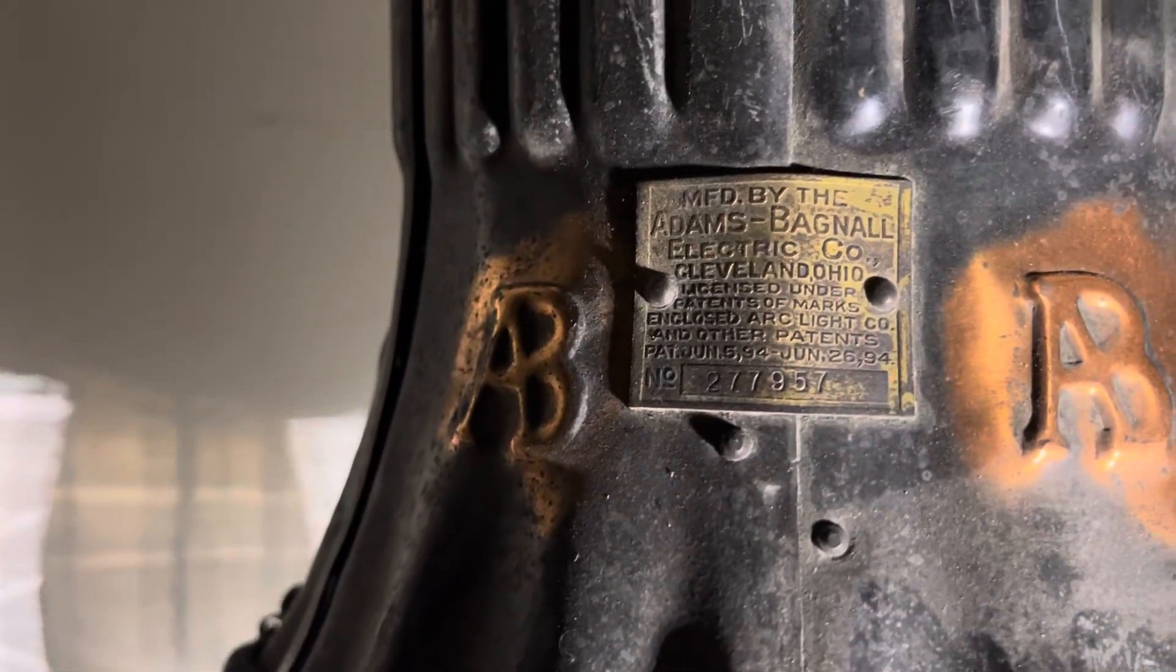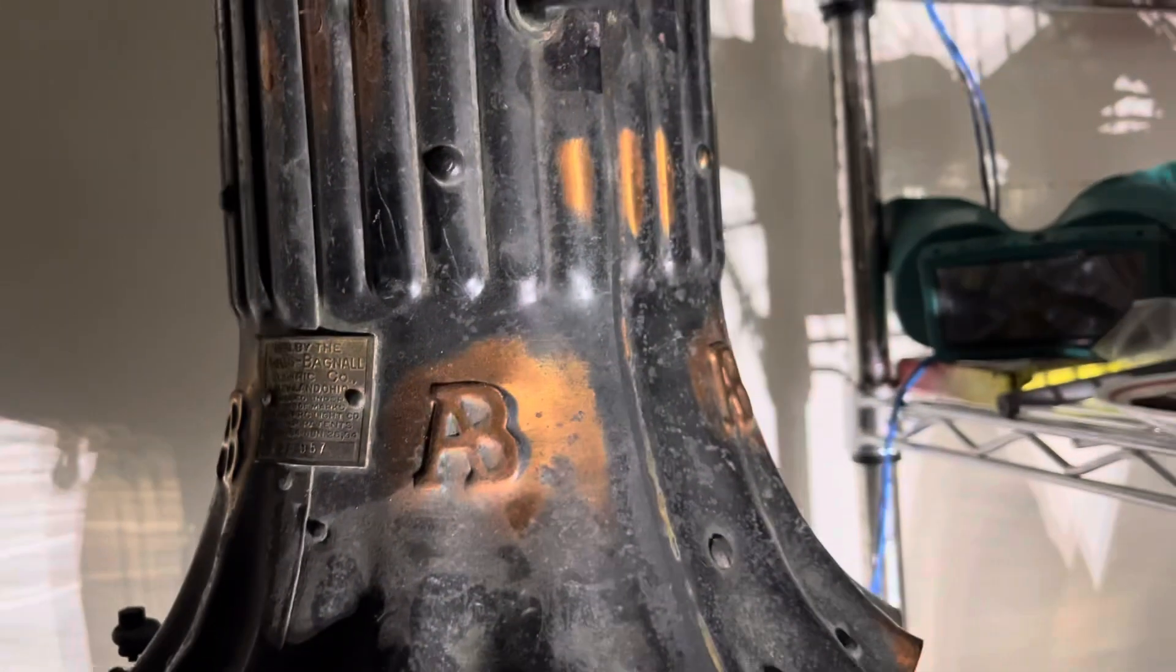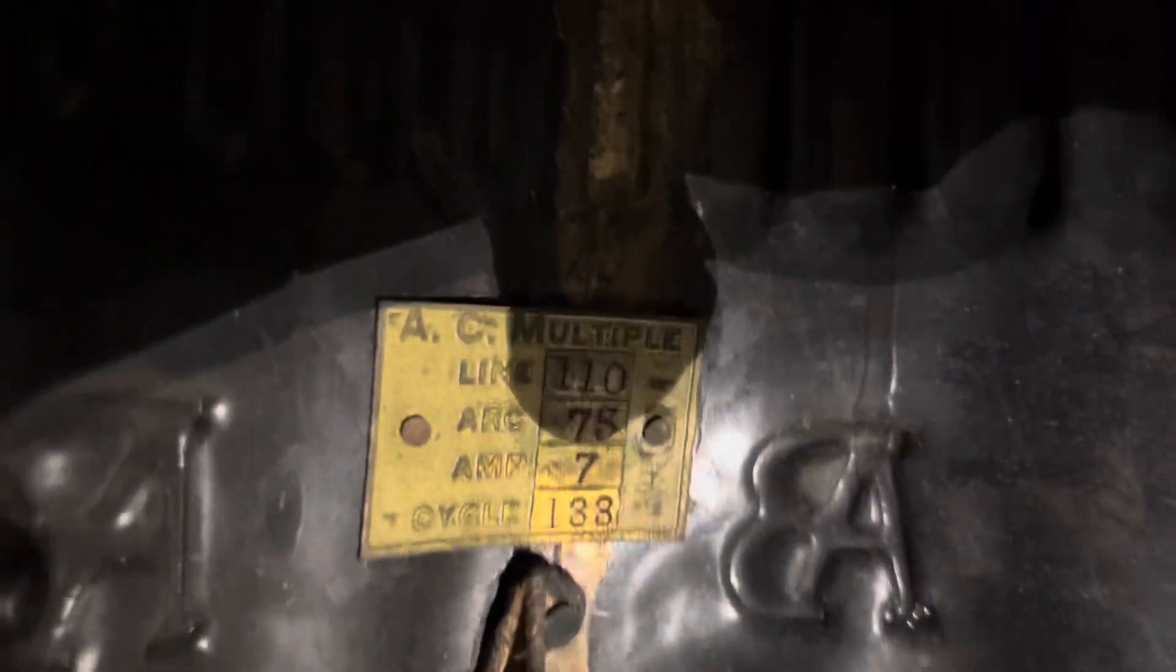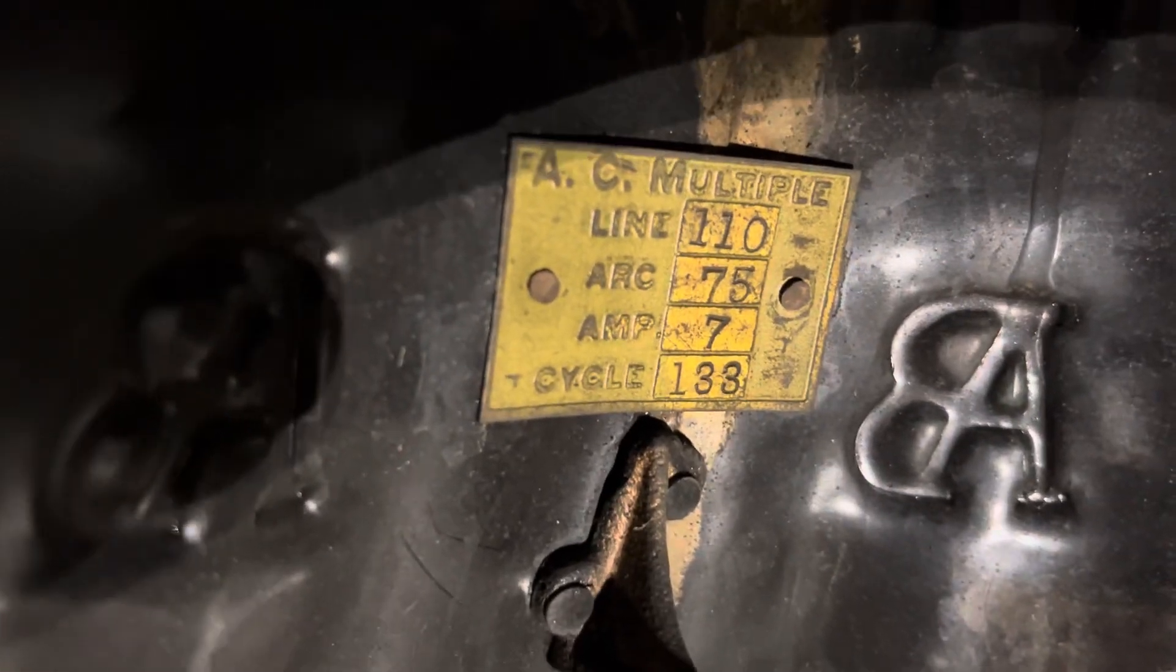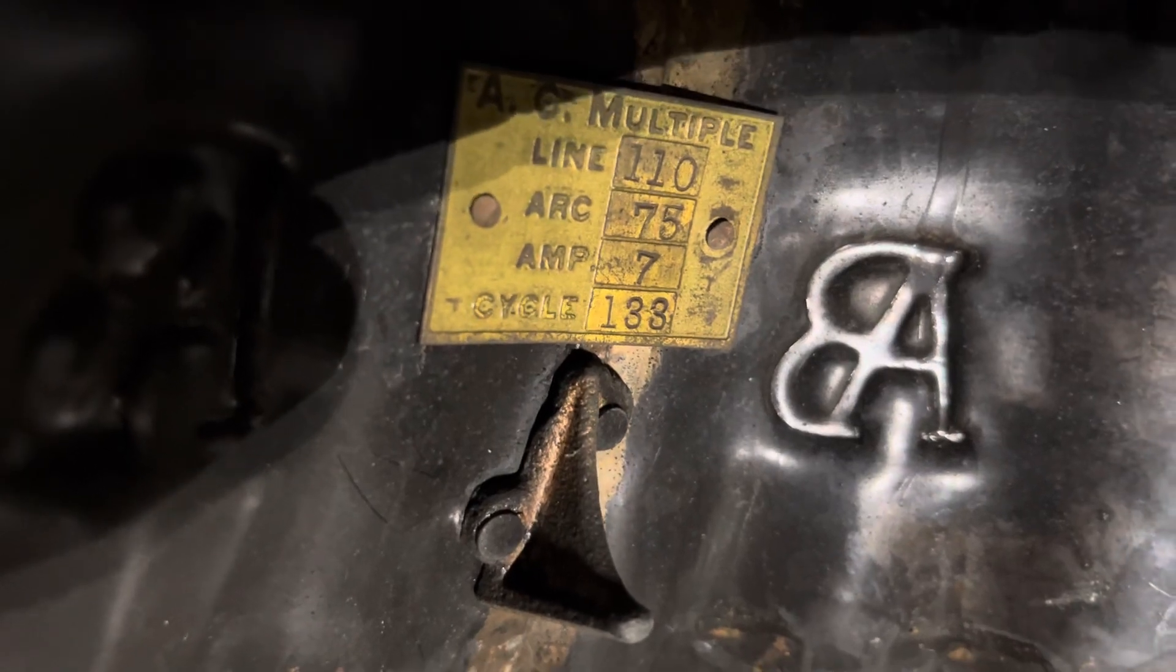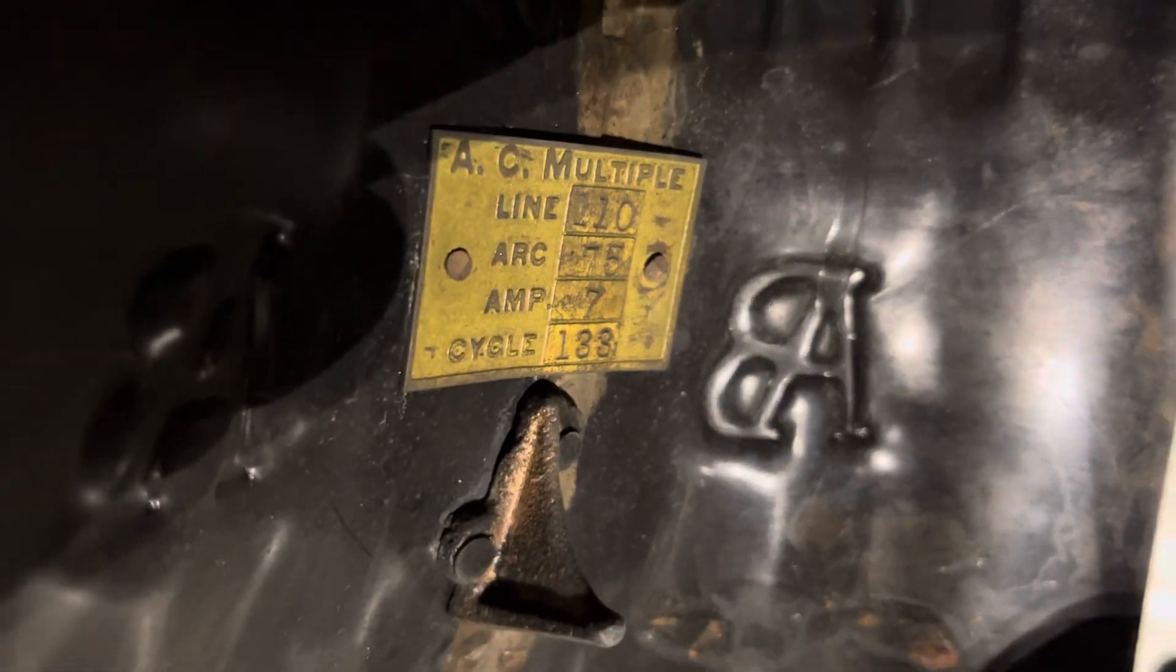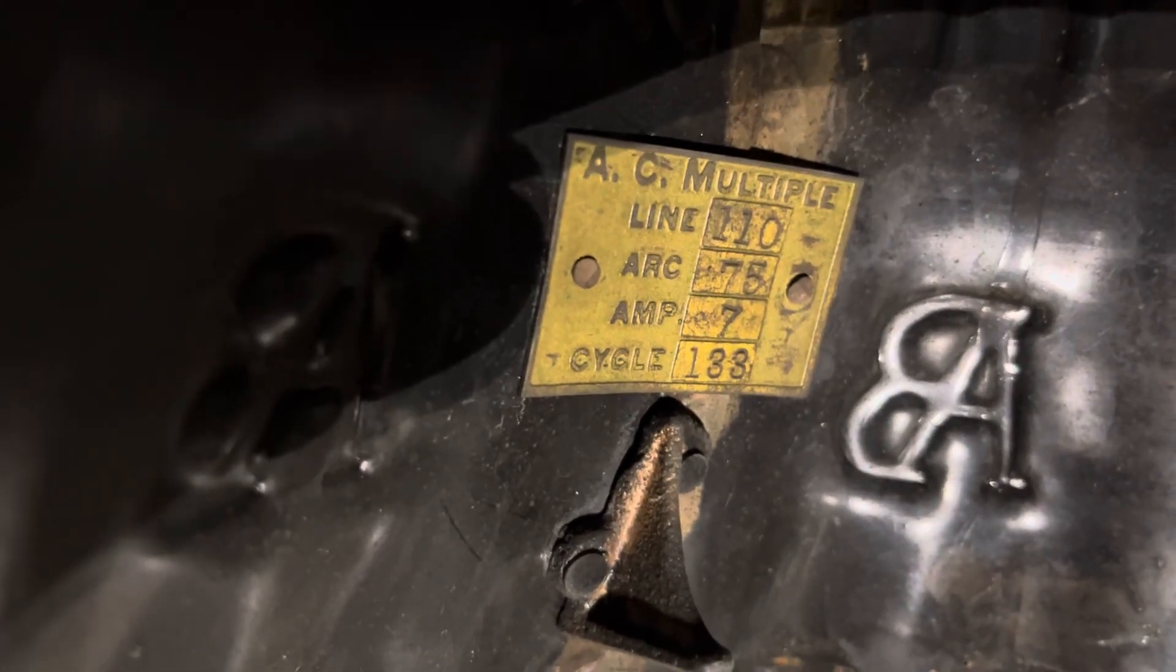Our nameplate right here has a very late serial number. It's manufactured by the Adams Bagnell Electric Company of Cleveland, Ohio with various different patent numbers. Opening the door, this is very uncommon for these Adams Bagnell lamps, but this particular one is marked AC multiple. The line voltage is 110 volts AC. At the arc, you want 75 volts. It pulls seven amps on the primary side. And look at that, the cycles, 133 cycles. This lamp is not designed to operate on 60 hertz unless you're willing to overheat the inductor and the solenoid coils. However, for 10 to 15 minutes, this lamp will run.